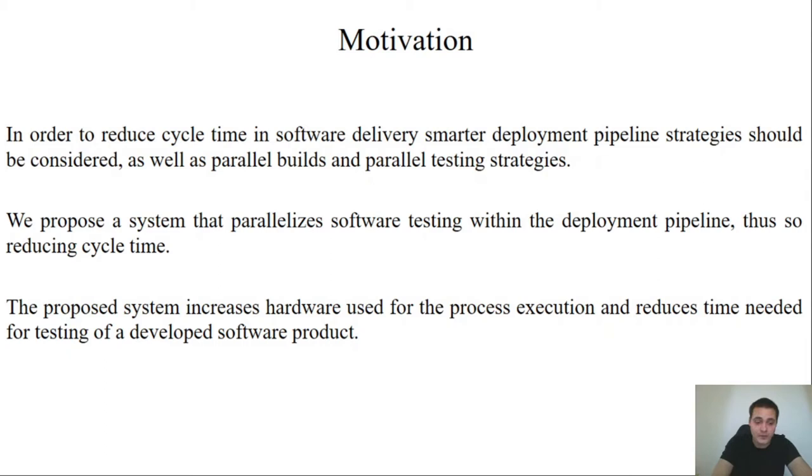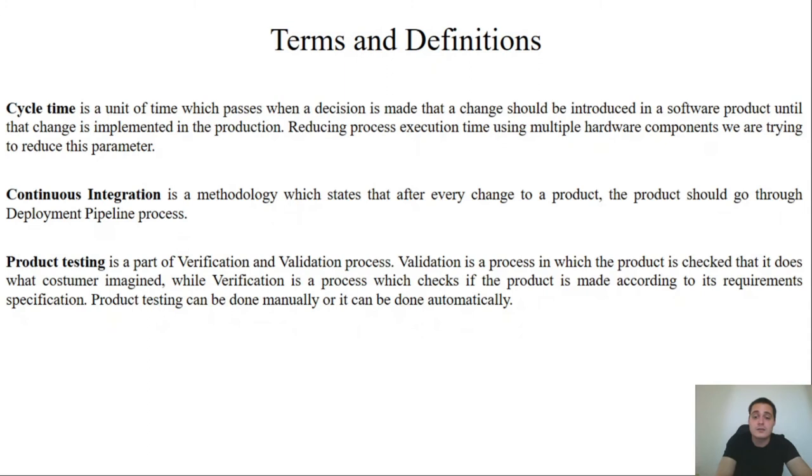What was the main motivation? We wanted to reduce the parameter called Cycle Time and in order to do that we changed the Deployment Pipeline process. We propose a system that parallelizes software testing within the Deployment Pipeline process. The proposed system increases hardware usage for the process execution and reduces the Cycle Time parameter.